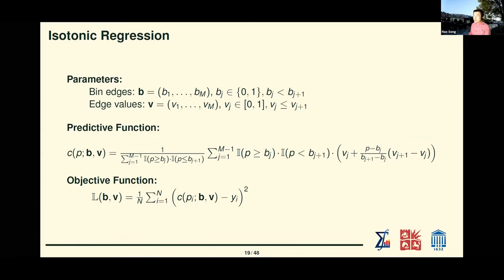For isotonic regression summary: the parameters include bin edges and their values in a monotonically non-decreasing fashion, and the bin average values also in monotonic fashion. For the predictive function, you either predict the value within the bin or adopt some linear interpolation. Most importantly, the objective function: isotonic regression minimizes the squared error between prediction and labels. In the binary case, where y_i is either 0 or 1, we can think of isotonic regression as minimizing the Brier score, as introduced in the last session.